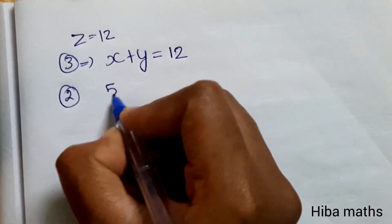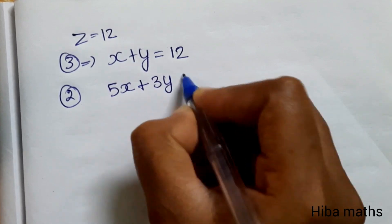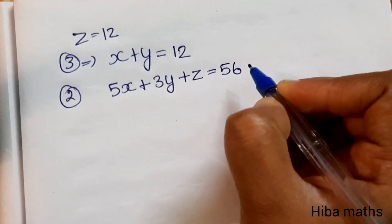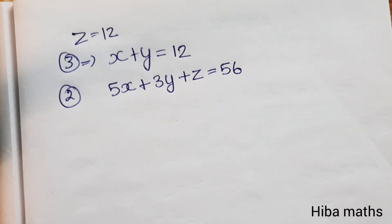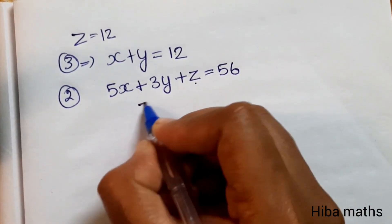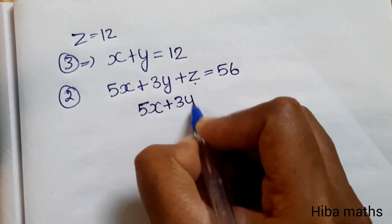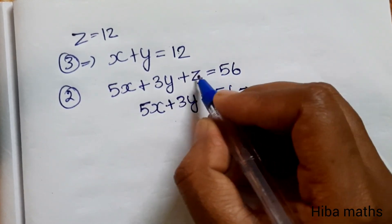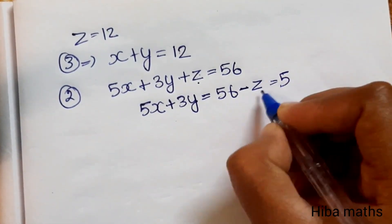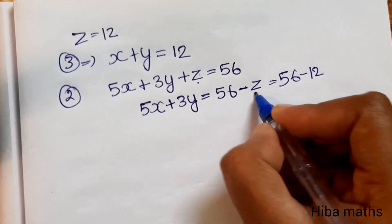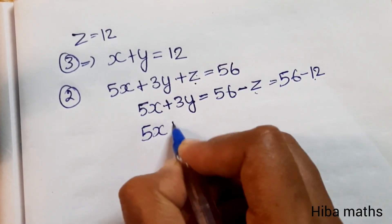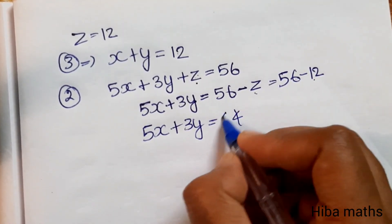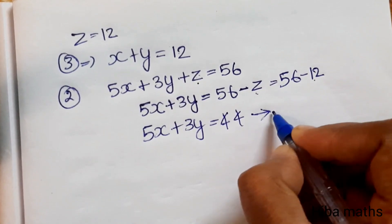The second equation is 5x plus 3y plus z equals 56. Substituting z equals 12 into this equation gives us a new equation in x and y. This becomes our fourth equation.